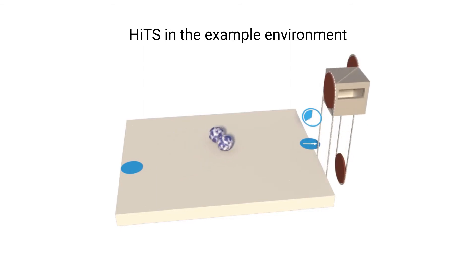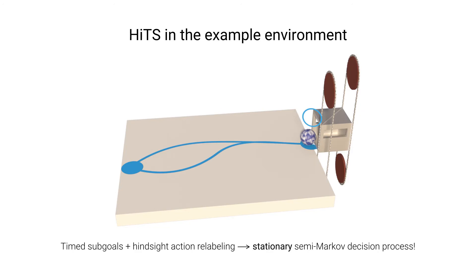Even if the low-level changes its behavior, the environment is guaranteed to be in the same state upon achievement of the timed subgoal, as it determines not only what to achieve, but also when.